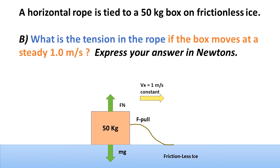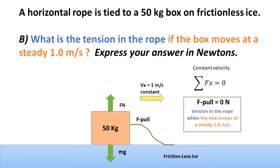It's important to notice that the y forces do not affect the x acceleration — only x forces affect x and y forces affect y. Since we have constant velocity, this box is in dynamic equilibrium. The summation of the forces has to be zero because there is no change in velocity. The only force in the x direction is the f-pull from the rope, and since the ice is frictionless, the tension f-pull has to be zero Newtons.